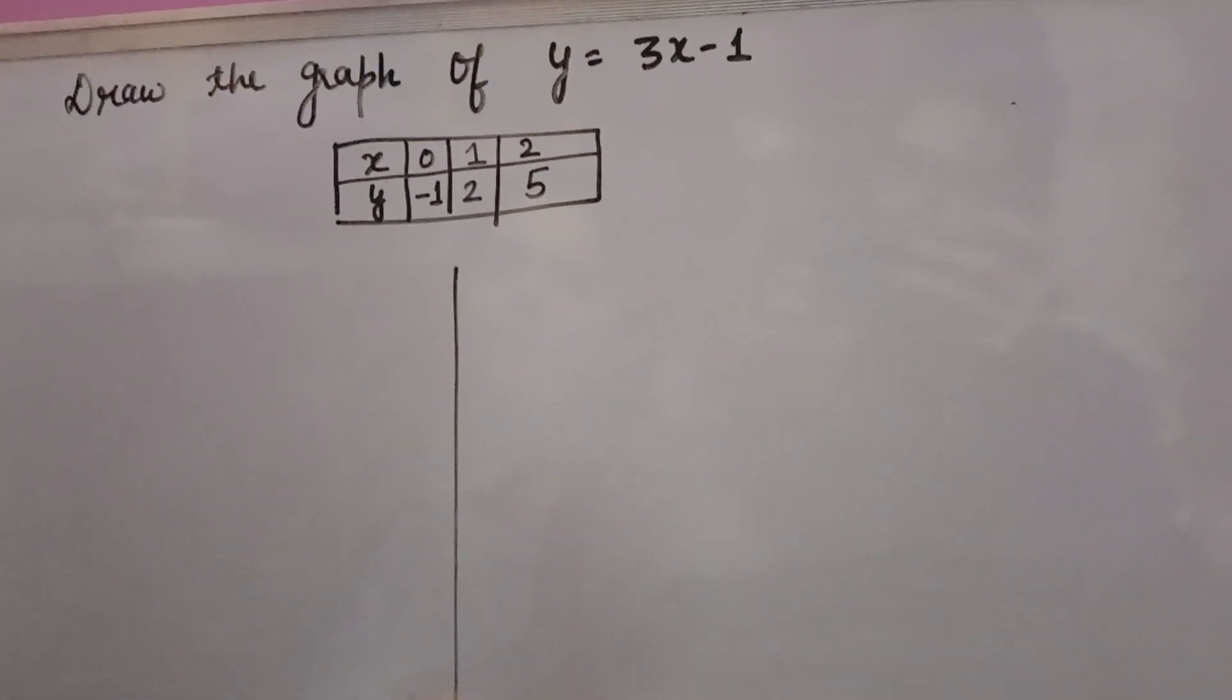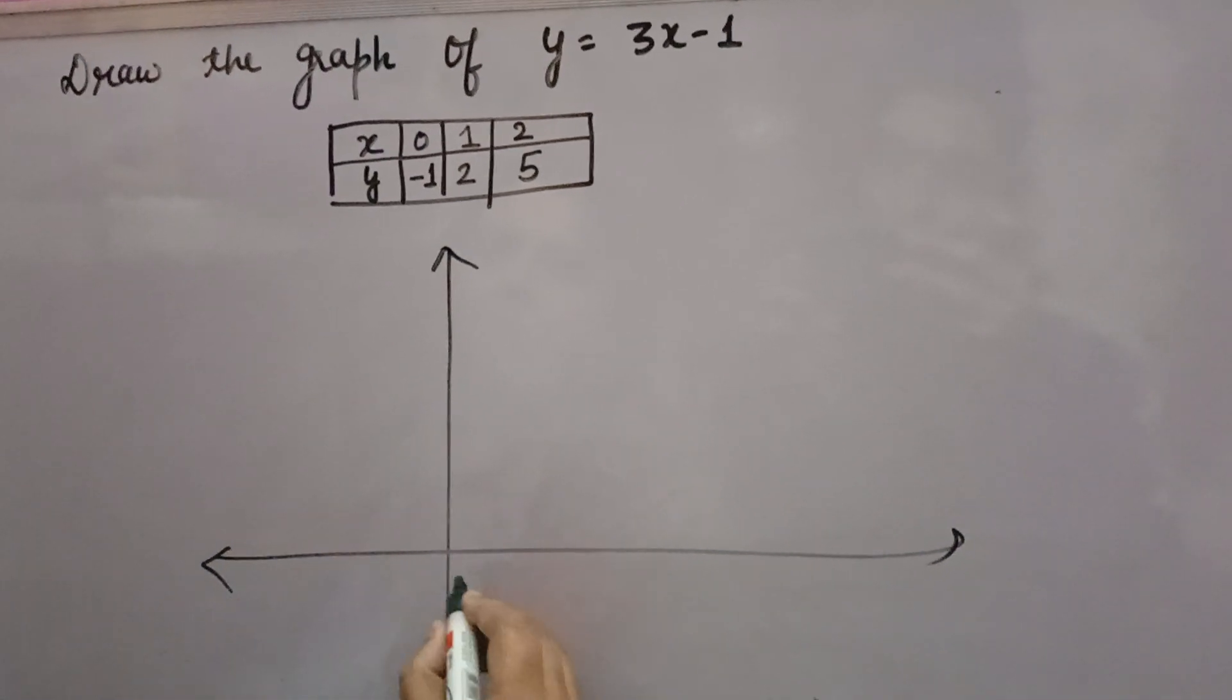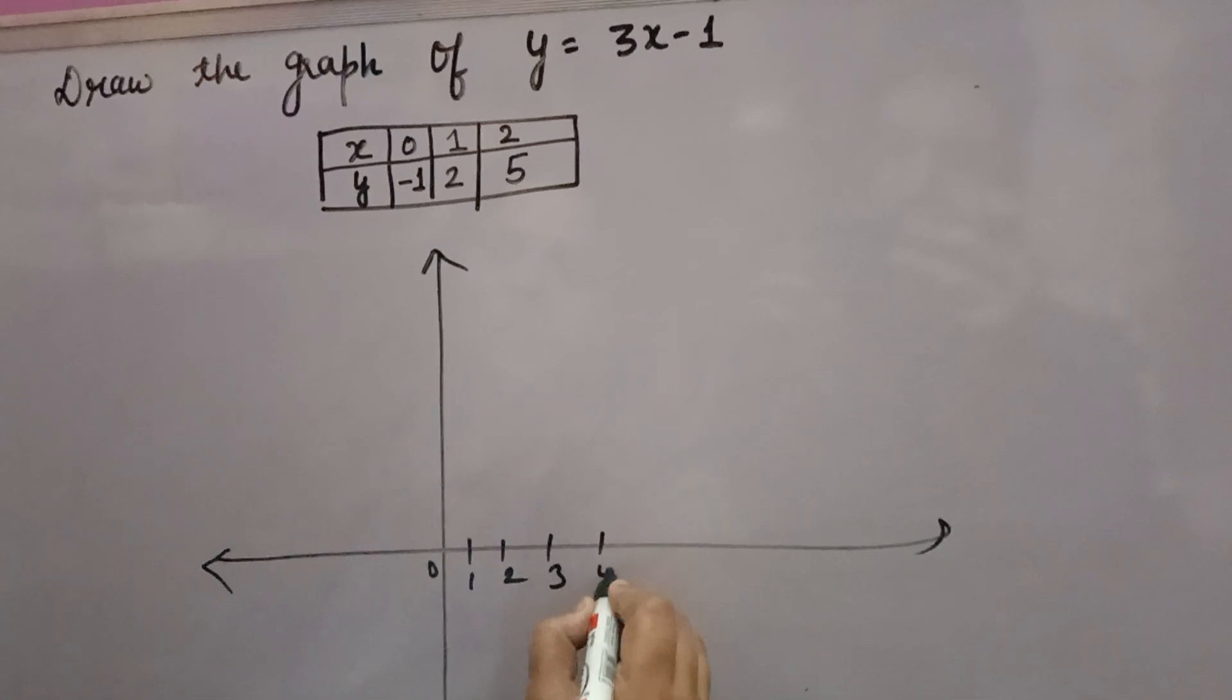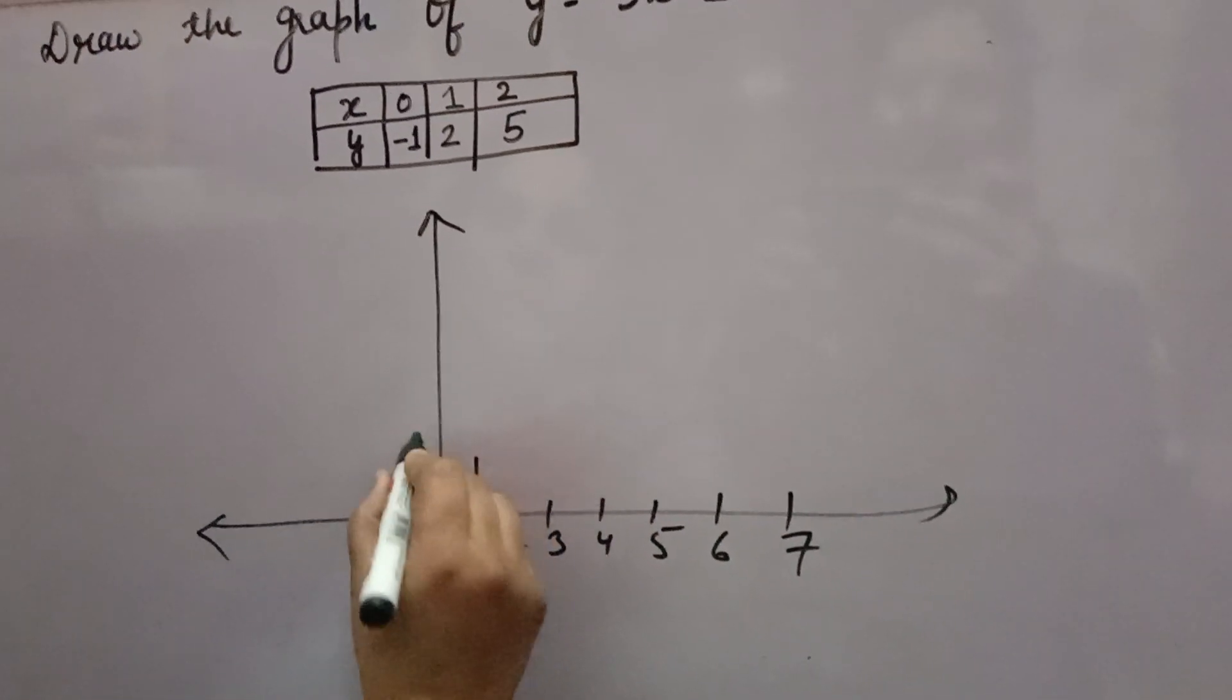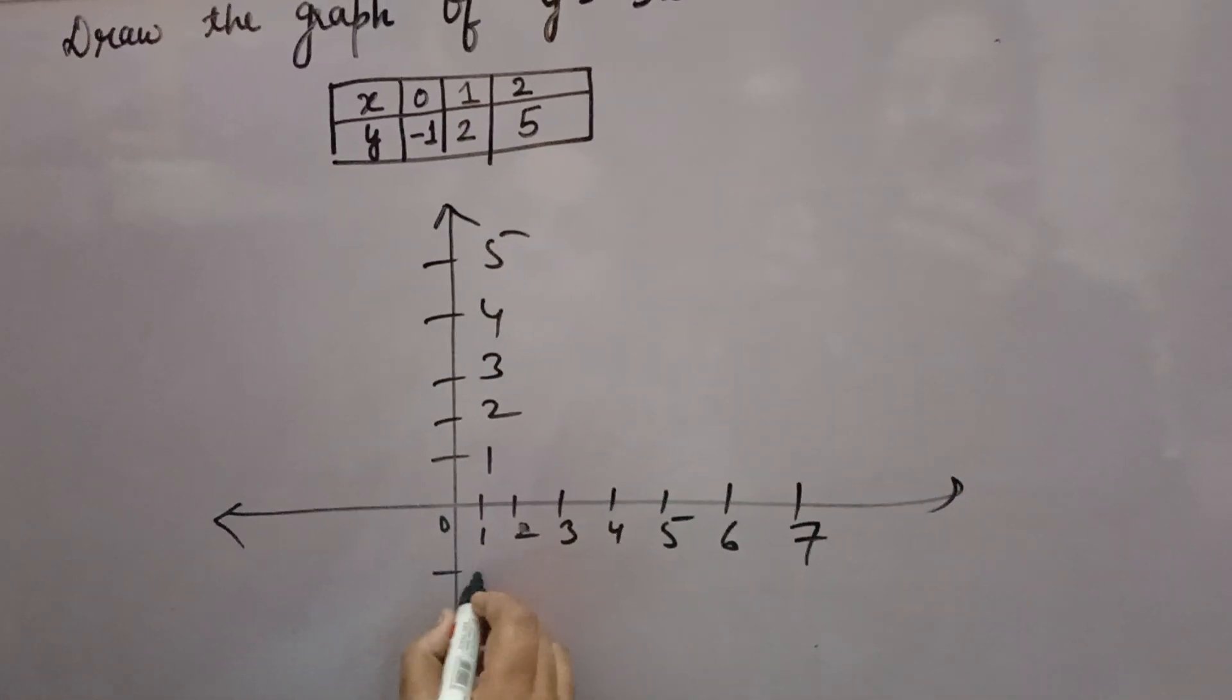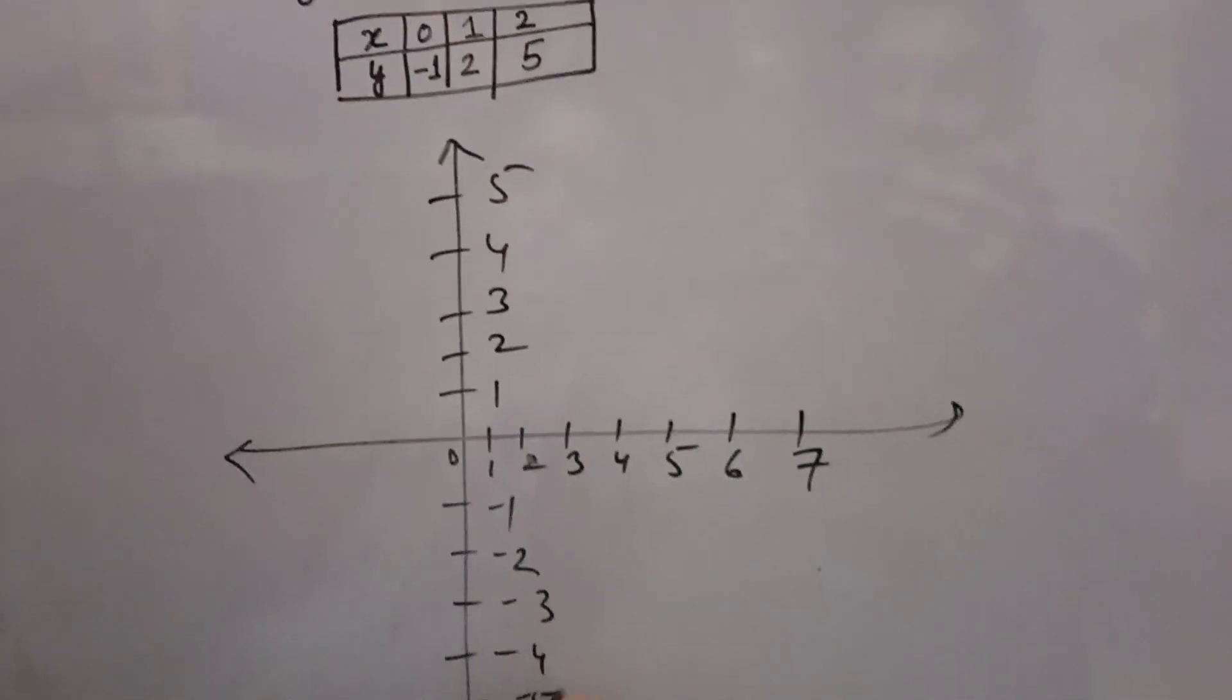You can take any other values also. Then you have to plot the graph. Drawing the axes: 0, 1, 2, 3, 4, 5, 6, 7... here 1, 2, 3, 4, 5... and here minus 1, minus 2, minus 3, minus 4, minus 5...